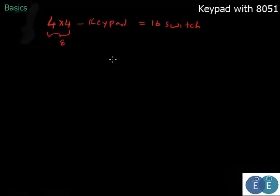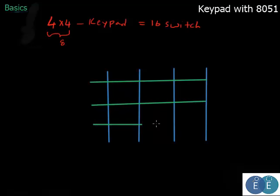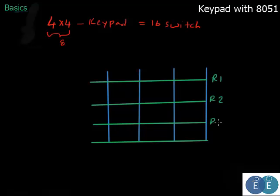When you want numbers or hex digits as input, this plays an important role. In any microcontroller-based project where you want numbers as input, you interface a keypad. Now let's see how the rows and columns are arranged. Since this is a 4x4 keypad, there are 4 rows — R1, R2, R3, and R4 — and 4 columns — C1, C2, C3, and C4.